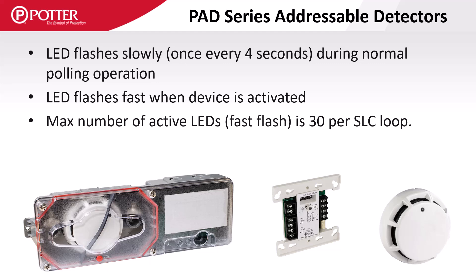Some operating characteristics of PAD devices are that the LEDs flash approximately once every 4 seconds while the SLC pulls the circuit, and the device LEDs do not latch on when activated, but instead flash rapidly. Each SLC loop can only have a total of 30 LEDs activated in rapid flash mode at a time, but that doesn't stop the control panel from receiving additional events.